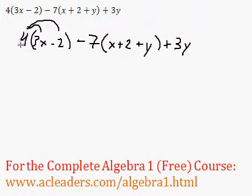So, let's get started. 4 times 3x is 12x. 4 times negative 2 is negative 8.